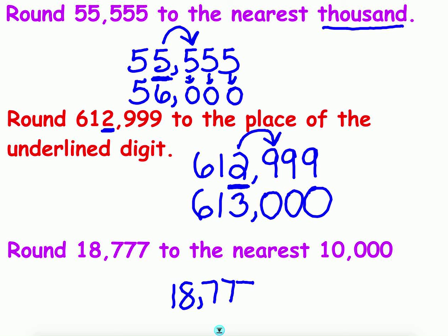Next example: round 18,777 to the nearest ten thousand. We have to find the ten-thousands place — ones, tens, hundreds, thousands, ten thousands — and underline it. Find your place, look next door. Eight is more than five, so the one gets raised to a two. Look to the right, there are zeros in sight. So 18,777 rounded to the nearest ten thousand is 20,000.